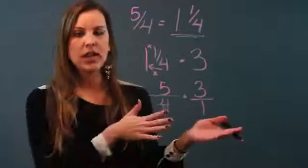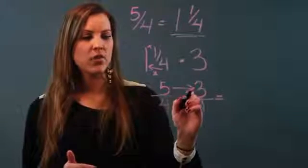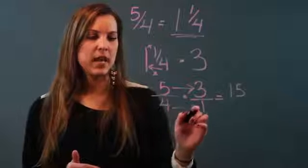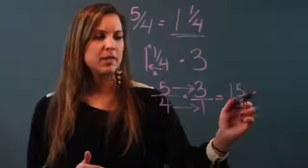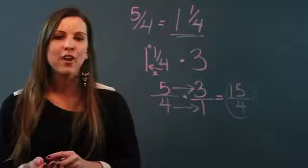And now I can go ahead and just multiply it like fractions. The way that you multiply fractions is straight across—numerator times numerator and denominator times denominator—which makes my final answer 15 over 4. And that is how you multiply fractions with remainders.